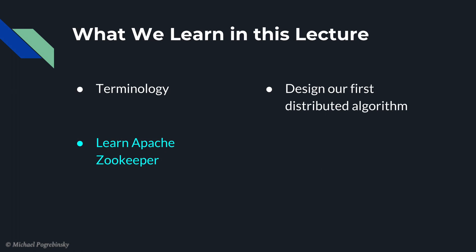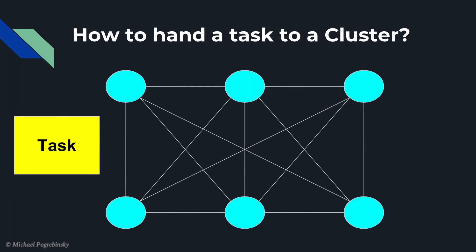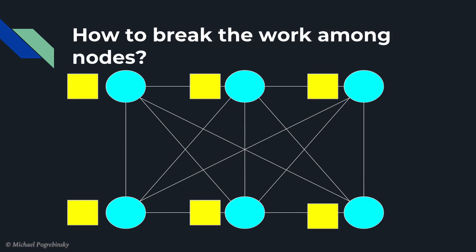Now it's finally time for us to start designing our first distributed system from scratch, which would lead us to talk about Zookeeper. Typically, when we have a very large amount of data to analyze or a complex computation to solve, we want to hand this task to a cluster of nodes. The question then is, what part of the task is going to be performed by which node? After all, the biggest benefit of a distributed system is that we can parallelize the work and let each node work independently for that common goal.